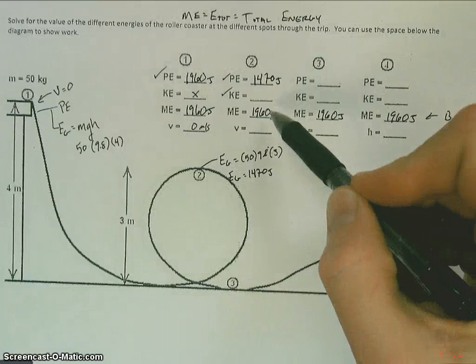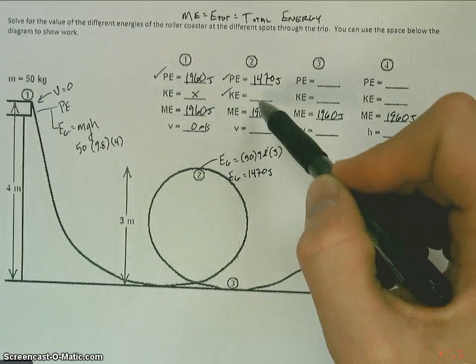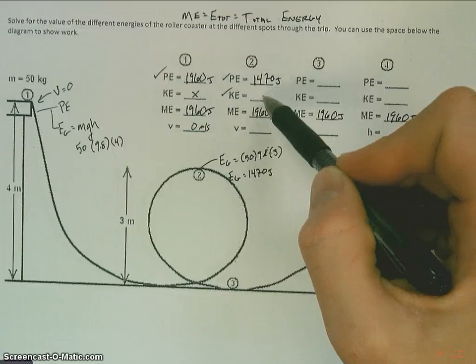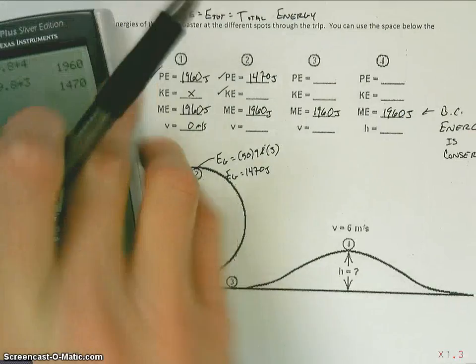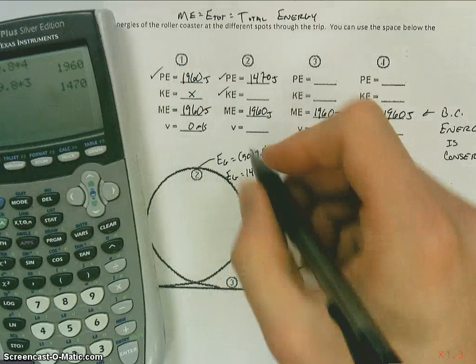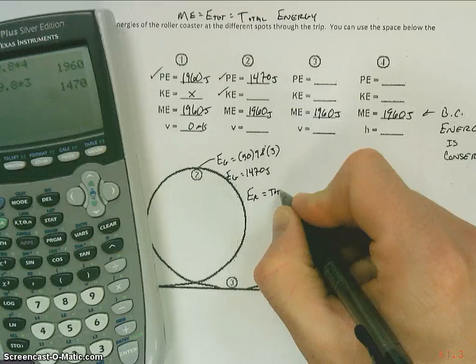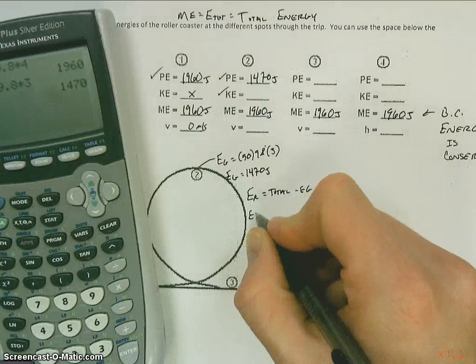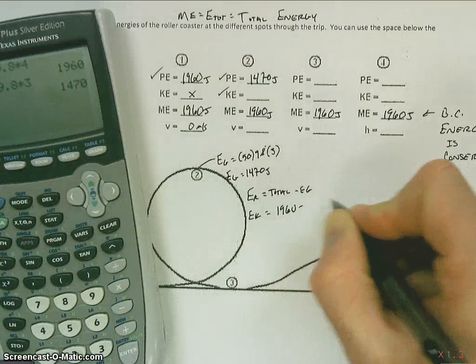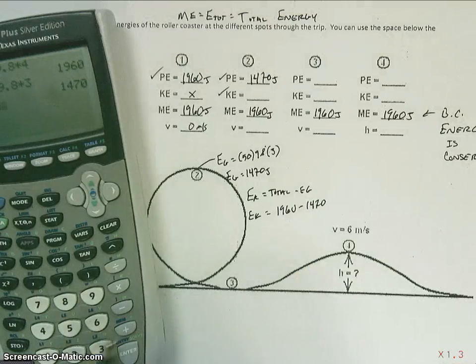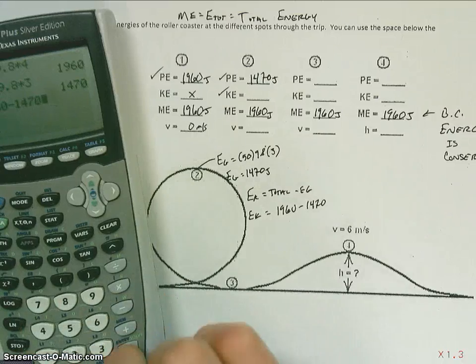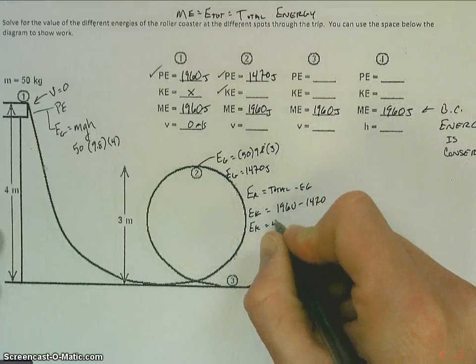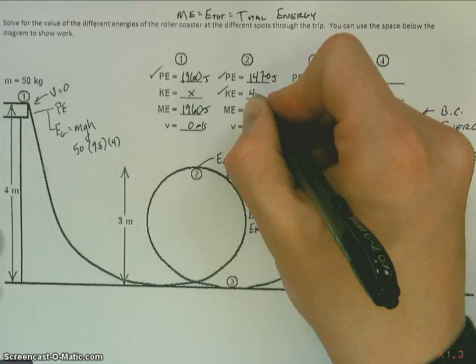Now I know the total mechanical energy is 1960 because it's conserved. So I can figure out the kinetic energy here by taking the difference. Because whatever energy I have left over from this potential has to be kinetic. So my kinetic energy here, EK, is going to be equal to my total minus 1470 or my EG. So EK is going to be equal to 1960 minus 1470, and we have 490 joules. So EK here is 490.